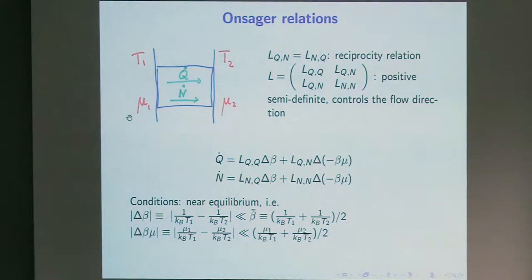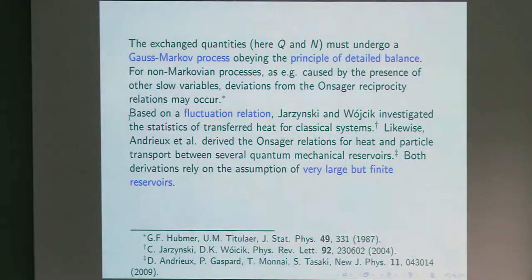So, one condition under which one has this is that these affinities are small, but one has found that, or argued under which conditions such things are valid, and one has found out that they are valid if these quantities which are transported, so the heat and the particle number, obey a Gaussian-Markov process which also observes detailed balance, which is related to time reversal invariance.